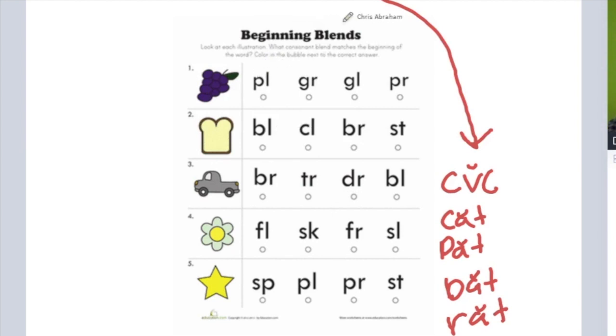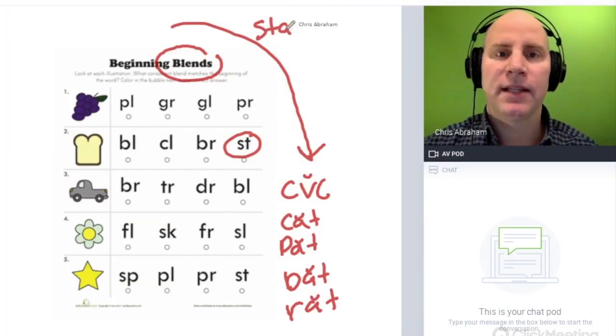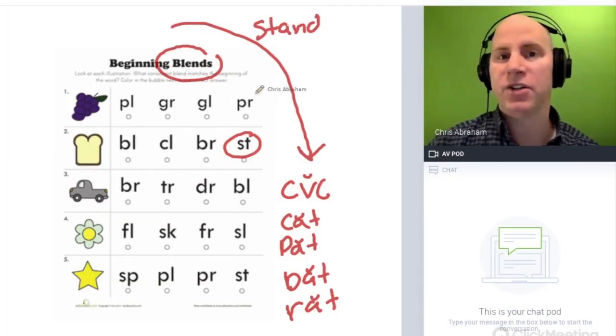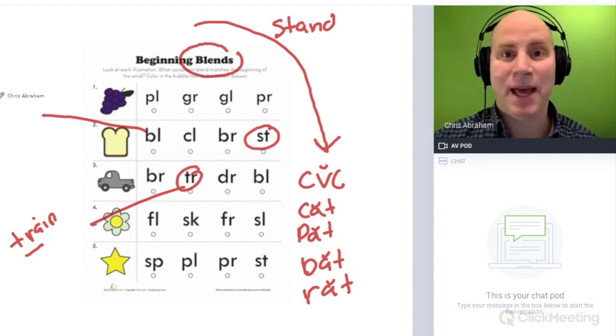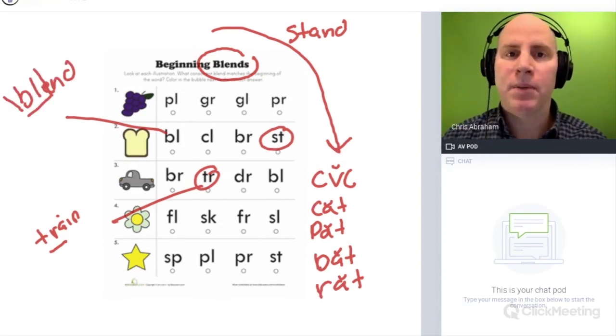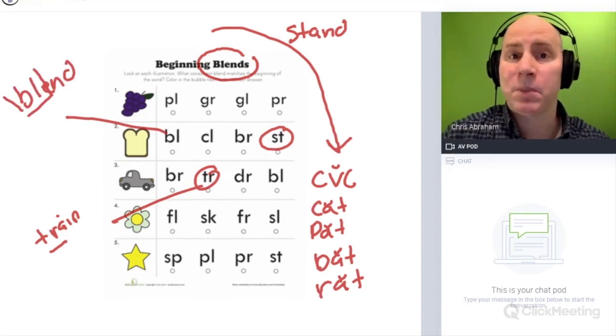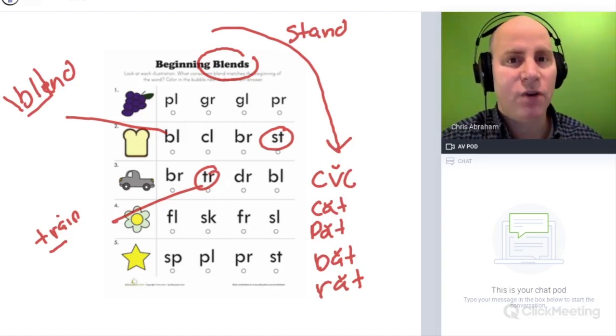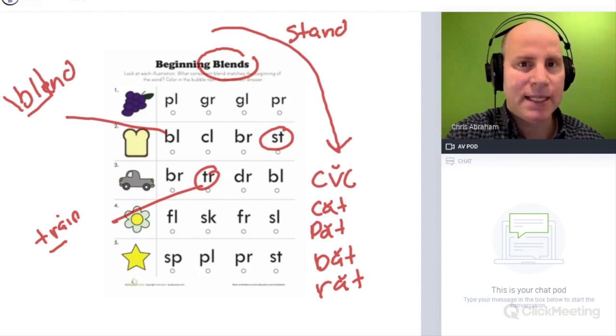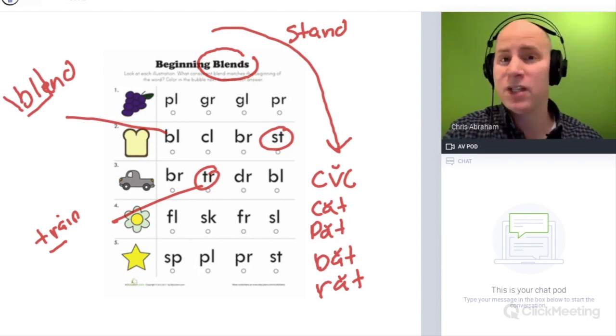But when we talk about blends, blends are beginner but for someone very new, blends are kind of tricky. For example, let's take stuff like stand that's actually got a blend, or truck, like train, or blend like blend. When I say blend, this is something that needs to be explicitly taught. A child might not hear the two distinct phonemes that are being blended in the blend because they're said so fast.